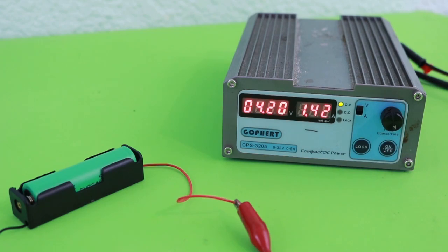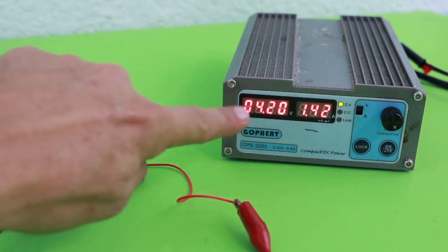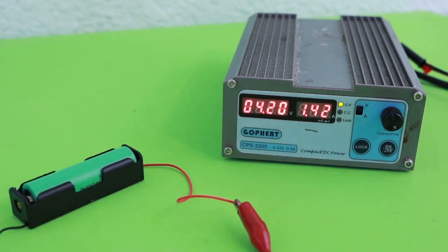The voltage is now at 4.2 volts. It will not rise more because it is limited by the power supply and now the current is getting down. It is now at 1.42 amps and we have to wait until it reaches the value of 125 milliamps.